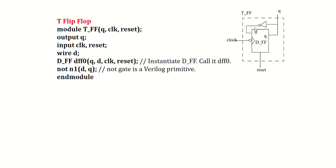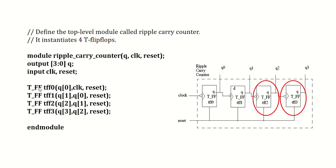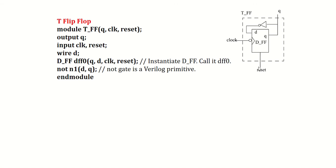Now let us write the T flip-flop Verilog code. The T flip-flop is designed using a D flip-flop, so we instantiate a D flip-flop here. The module name is T_FF — recall this is the module name used while instantiating in the ripple carry counter. The output is Q, inputs are clock and reset. I have declared D as a wire because it is the internal connection between the inverter output and the D flip-flop input.